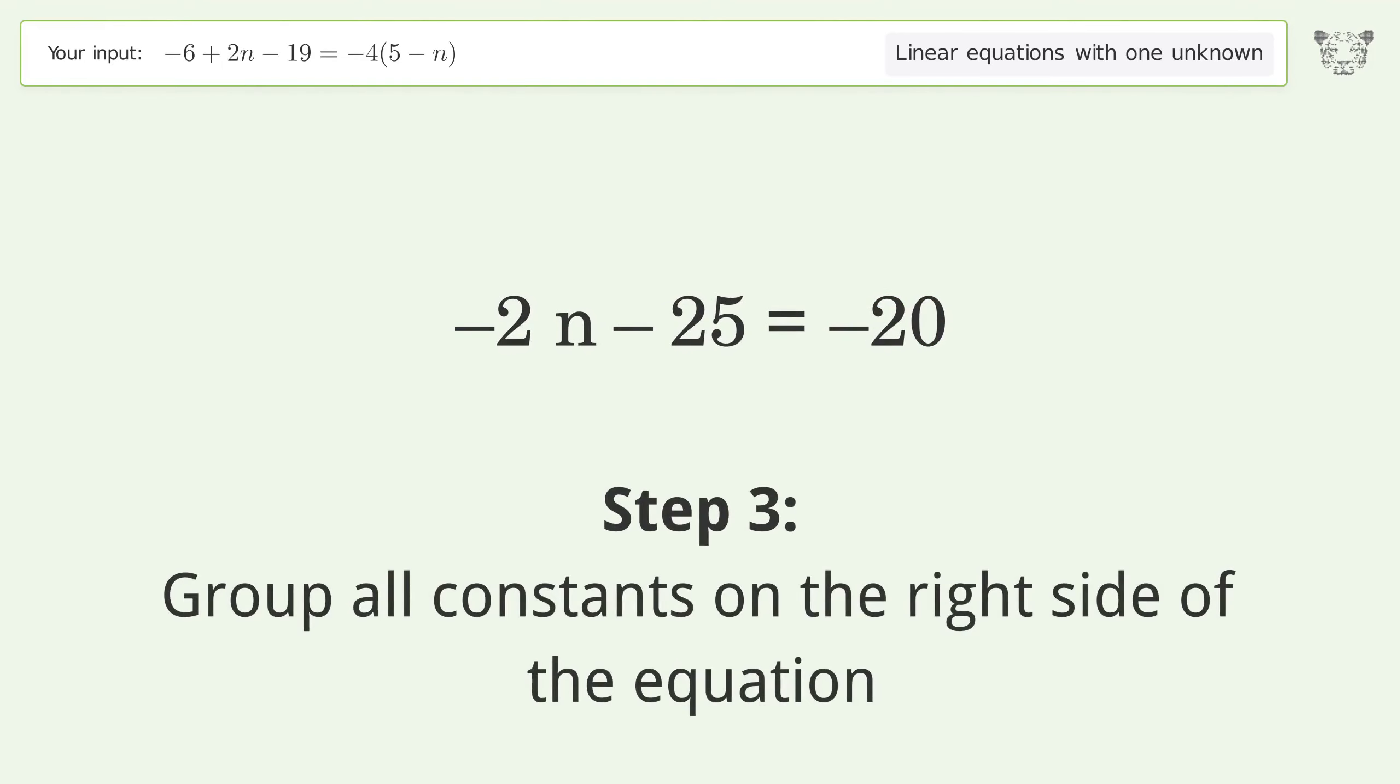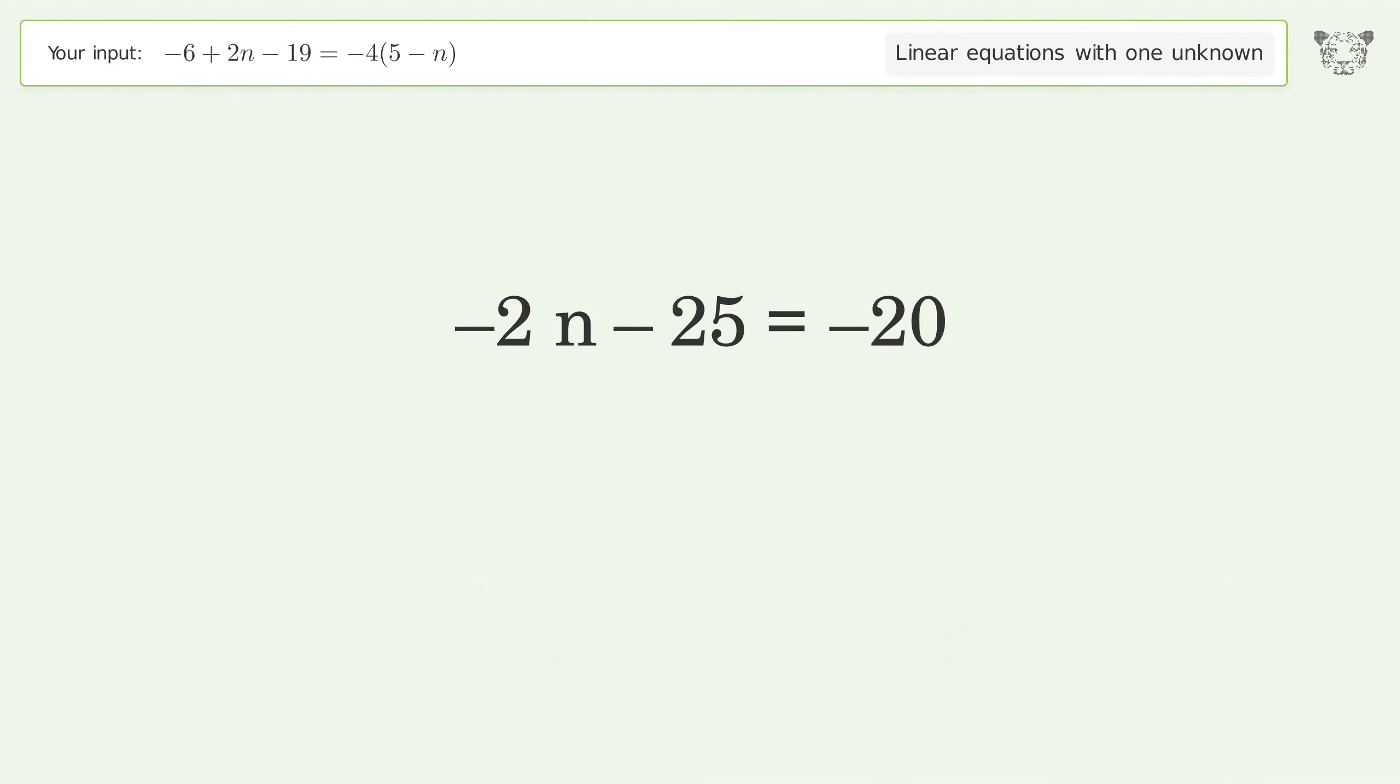Group all constants on the right side of the equation. Add 25 to both sides. Simplify the arithmetic.